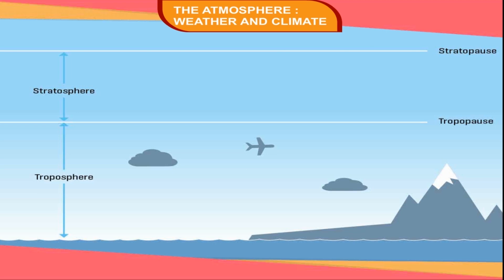Troposphere. The lowest and densest layer of the atmosphere is known as the troposphere. About three-fourths of the mass of the atmosphere is contained within this layer. This is the sphere in which changes related to weather conditions occur. It protects us from the heat of the sun during the day and keeps the earth warm at night. The extent of this layer is about 18 km above the equator, but only 8 km above the two poles. Most of the water vapour, dust particles and clouds are found in this layer. The upper limit of the troposphere is called the tropopause.